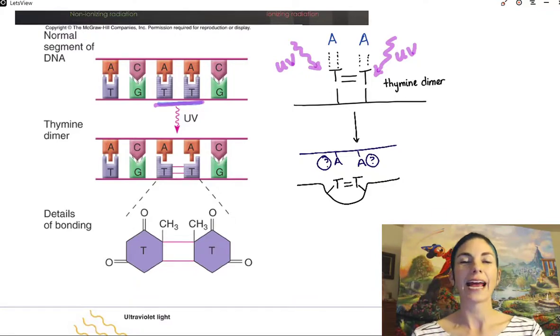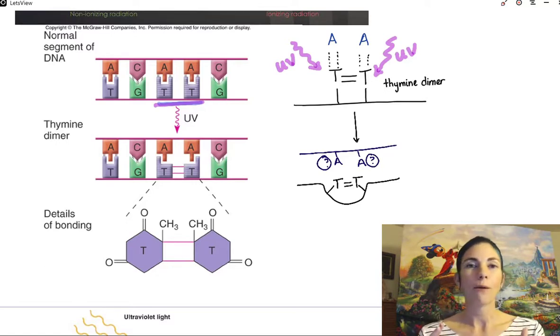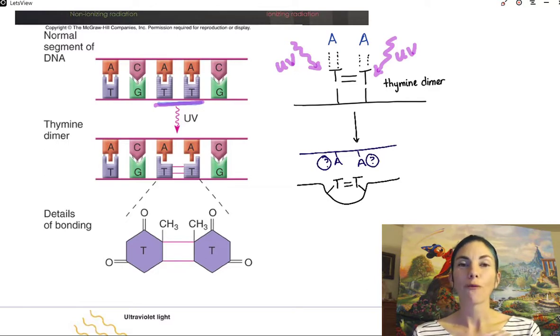But imagine if there's a thymine dimer, there's gonna be a big bulge there. So I actually can utilize that fact to identify where the thymine dimers are. And so if I can identify where the thymine dimers are, I can remove them and replace them with fresh thymine before the next round of DNA replication hits. Remember, the mutation is not set in stone until the next round of DNA replication.